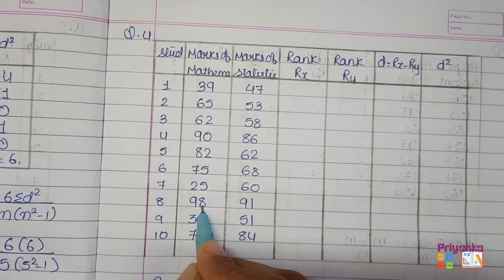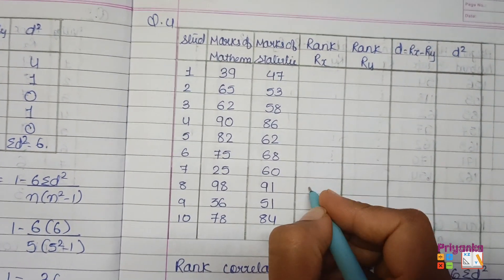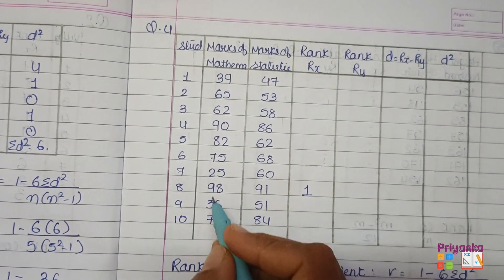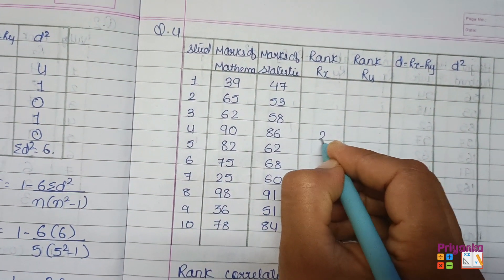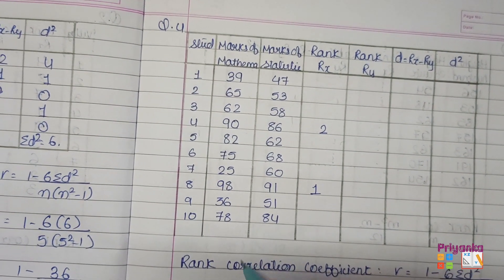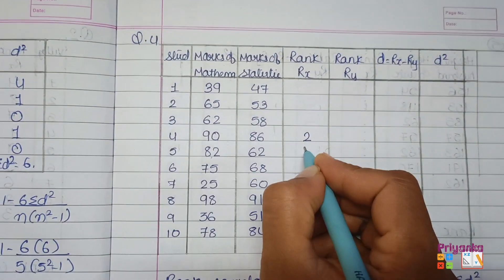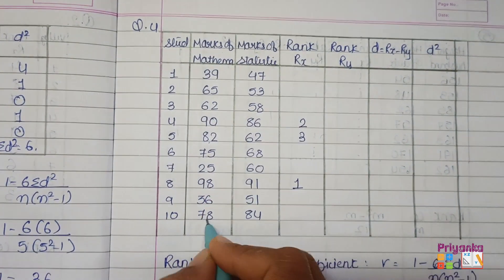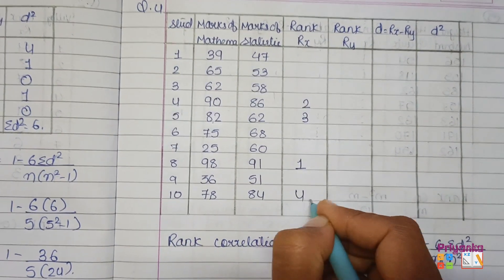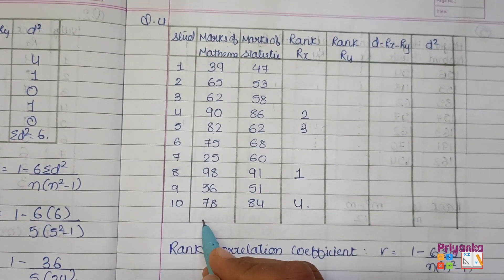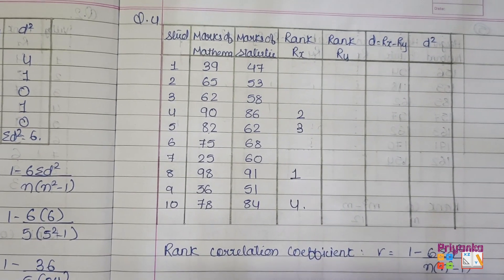First, find the maximum value — I can see it's 78, so give it rank 1. Next is 90, rank 2; then 82, rank 3; next is 78, rank 4. This is how you give the ranks. Complete the Rx and Ry columns by assigning ranks to the marks in mathematics and statistics respectively.